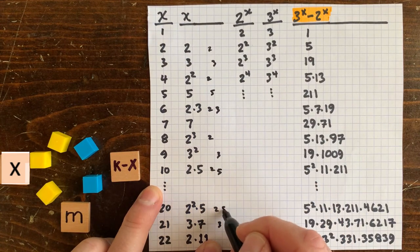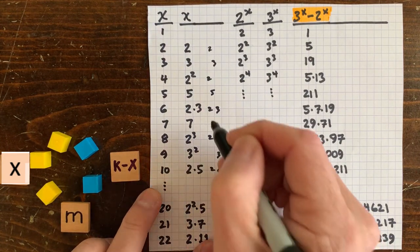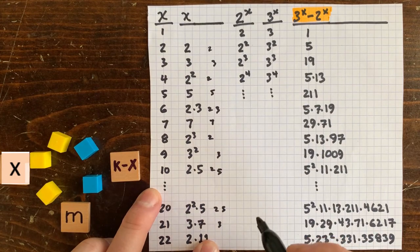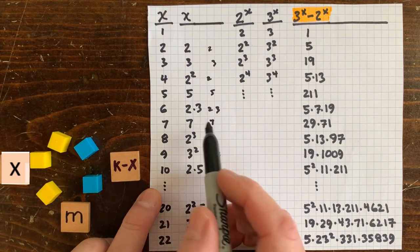Every time we hit a prime x, we introduce a new factor into the table. We write it an infinite number of times.